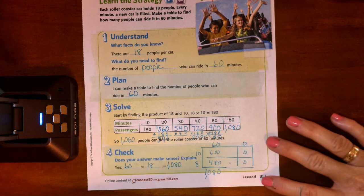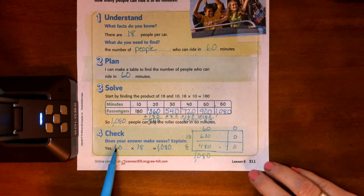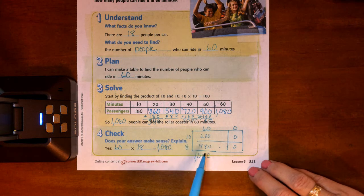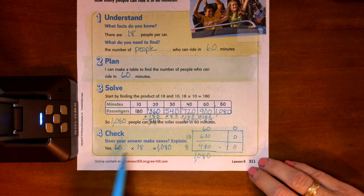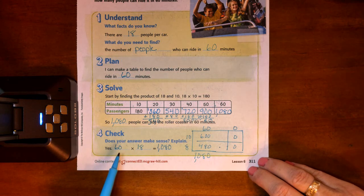And then they ask us to check our answer. So you can see that 60 times 18 is 1080. But I also did an area model just so that you could check just in case you still weren't completely confident in the mommy daddy method.